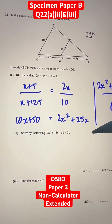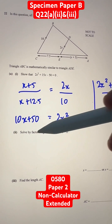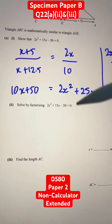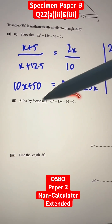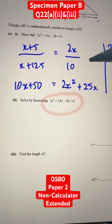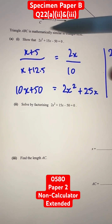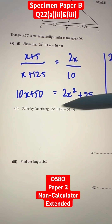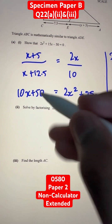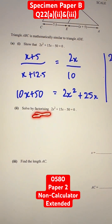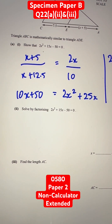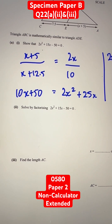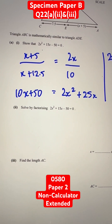Let's continue with question 22a, part 2. Solve by factorizing: 2x squared plus 15x minus 50 equals 0. We just proved this in part 1, and now we have to solve it by factorization. Only using the factorization method will give you marks — you cannot use the quadratic formula or completing the square.